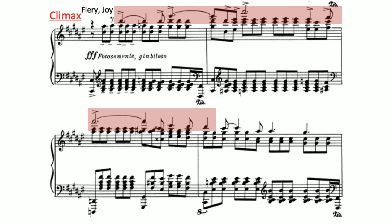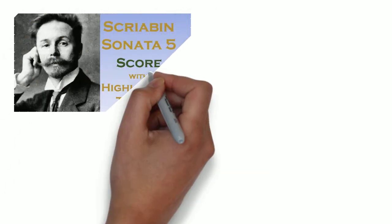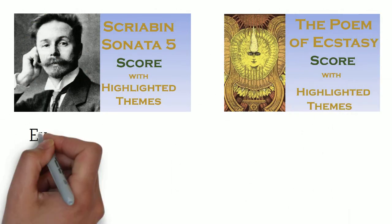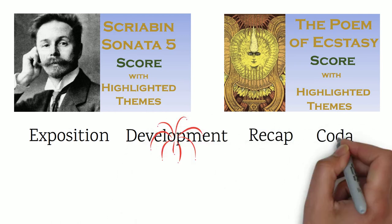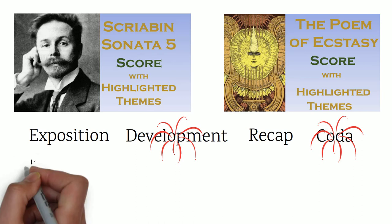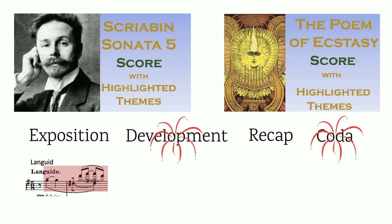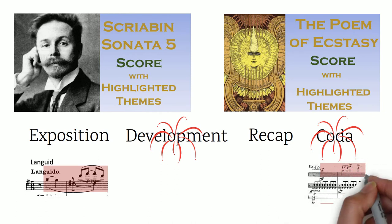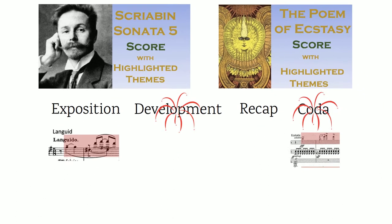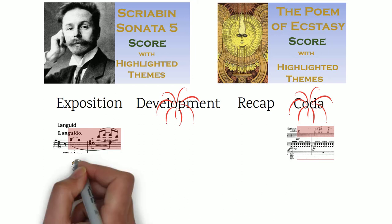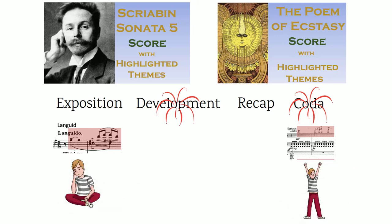Now let's listen to that same theme brought to a climax in the final movement. Sonata 5 and the Poem of Ecstasy raise the bar by including two climaxes — one at the end of the development section and another in the coda. The primary motif in Sonata 5 is originally marked languid, but when it's used as a climax in the coda, it's marked ecstatic. This demonstrates how Scriabin uses climaxes to elevate themes that were previously quiet and low in energy.